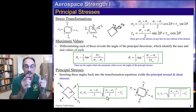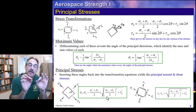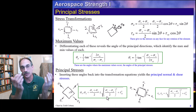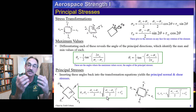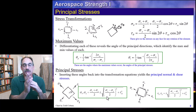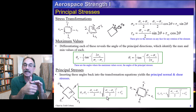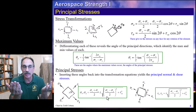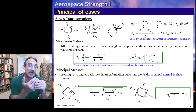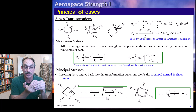Doing the same thing for the shear stress equation gives us the max shear stresses — two values, plus and minus. Normally we'll ignore the plus-minus on the max shear values, which just means up and down. So at angle theta s, we get plus or minus a certain amount of stress, and that would be the max value of shear stress for any rotation of the element.